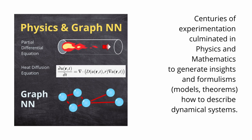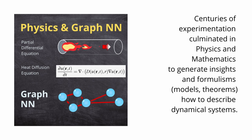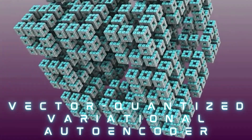As I showed you in my other videos, physics played an important role in providing and igniting new ideas for how to implement code. Physics and mathematics generated insights and formalisms — models, theorems — on how to describe dynamical systems for centuries. Now we are going to use them in our particular case with the vector quantized variational autoencoder.